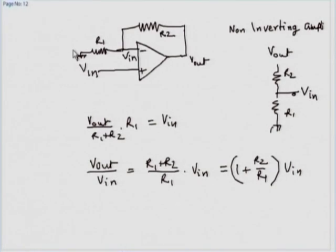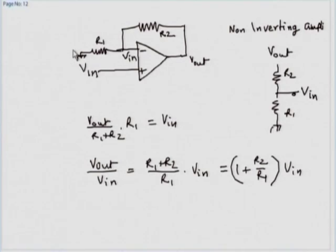That stands to reason because the fraction of the output given by the potential divider has to equal V_in. Therefore, the output has to be greater than V_in to begin with, so that when divided down by the potential divider it still equals V_in. The third key point is that we are drawing no current from the input source — the input source is connected directly to the op-amp input and nothing else, so it provides no current.